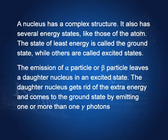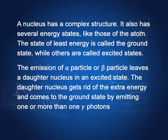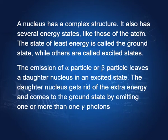A nucleus has a complex structure with several energy states, like an atom: ground state, first excited state, second excited state, and so on. The state of least energy is called the ground state. The emission of an alpha particle or beta particle leaves the daughter nucleus in an excited state. It then comes down to the ground state by emitting gamma particles.